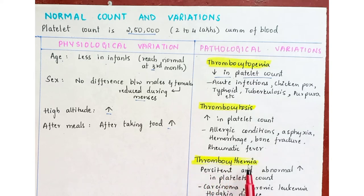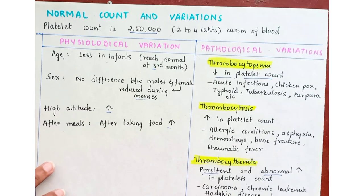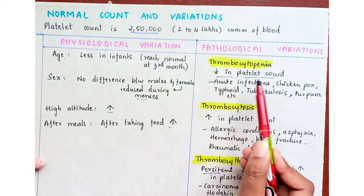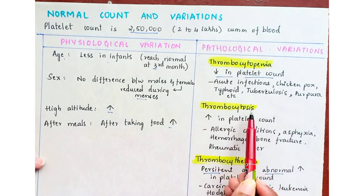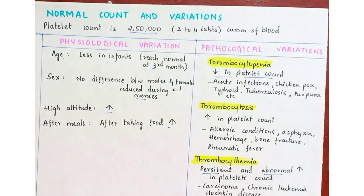Thrombocytemia is a persistent and abnormal increase in platelet count, seen in carcinoma, chronic leukemia and Hodgkin's disease. To summarize: thrombocytopenia is decreased platelet count, thrombocytosis is increased platelet count, and thrombocytemia is persistent abnormal increase in platelet count.